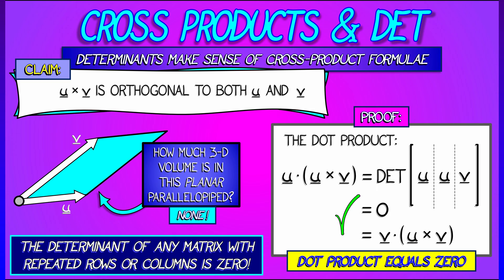And more generally, this presages the result that the determinant of any matrix with repeated rows or repeated columns is zero.